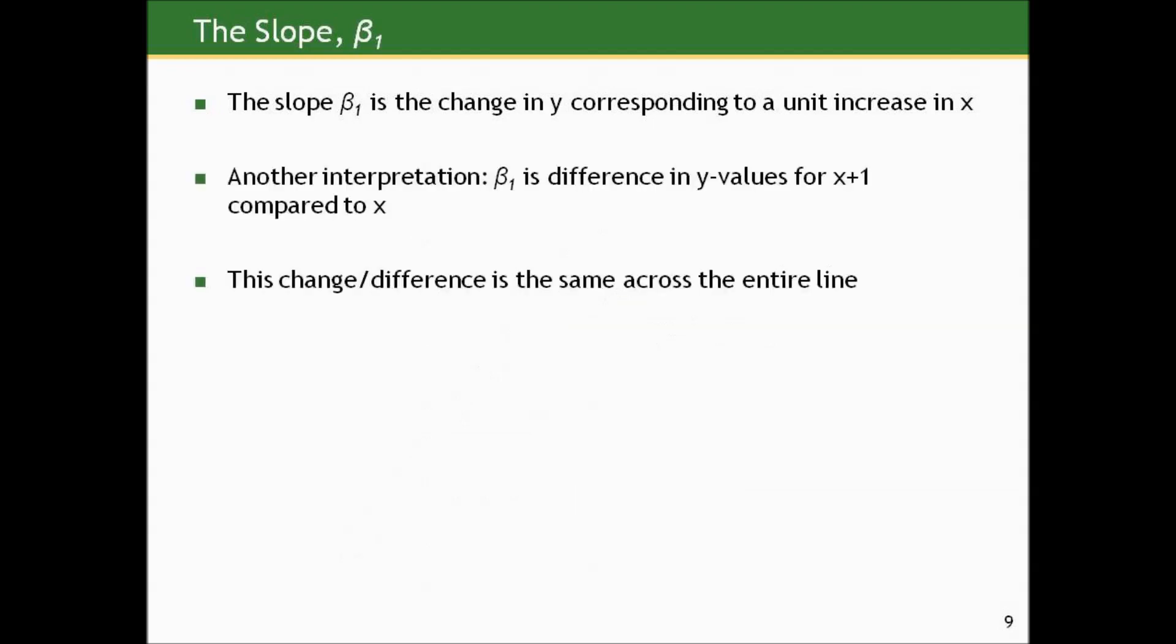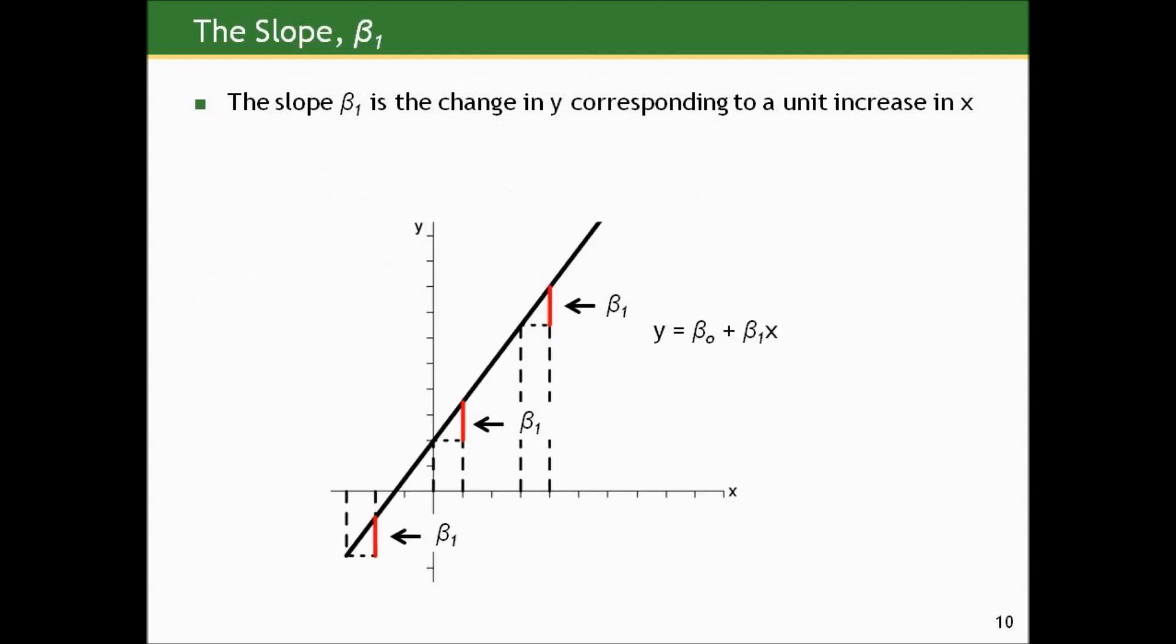Another way to think of the slope is it's the difference in y values for x plus 1 compared to x. The important thing to know about a line is that this difference or change is the same for any one unit in x across the entire line. That's the definition of a line. Wherever we are on the line, the difference in y for two x values who differ by one unit is always the slope, β1.